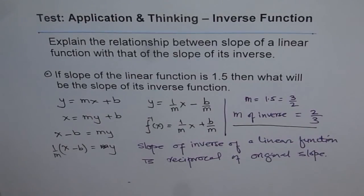So in general, if the slope of a linear function is m, then slope of its inverse function will be 1 over m, the reciprocal. That's an interesting conclusion. Thank you.